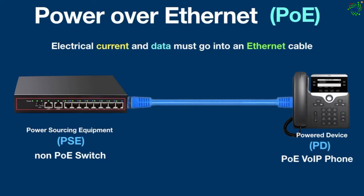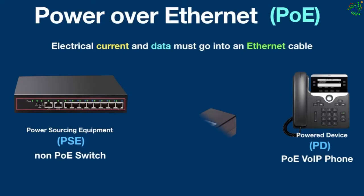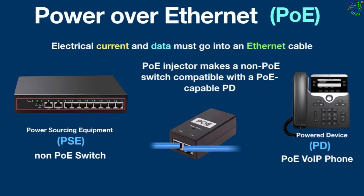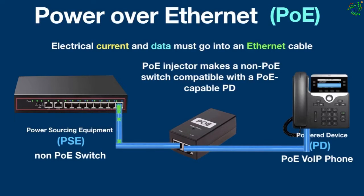What would happen if we plug an ethernet cable into a non-PoE switch? In this case, nothing would happen because a non-PoE switch only sends data, not power, through the ethernet cable, but the phone needs both power and data to work properly. However, there is a way to send data and power to the phone without replacing the switch — by deploying a PoE injector. A PoE injector makes a non-PoE switch compatible with a PoE-capable power device. It is placed between the non-PoE switch and the power device, and it adds power to the ethernet cable when plugged into an electrical socket.